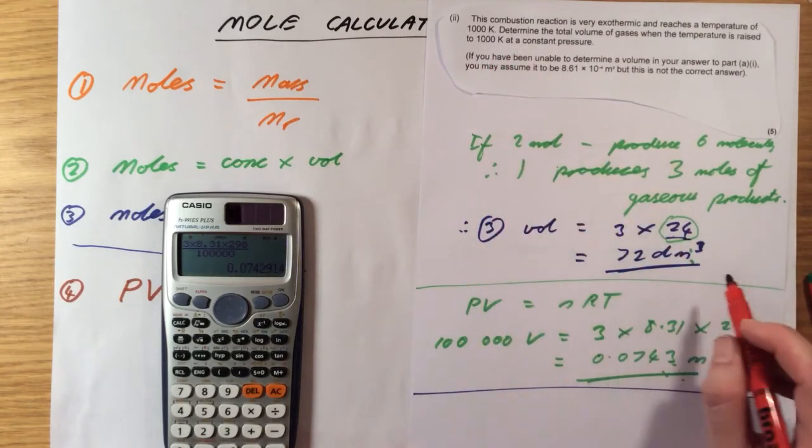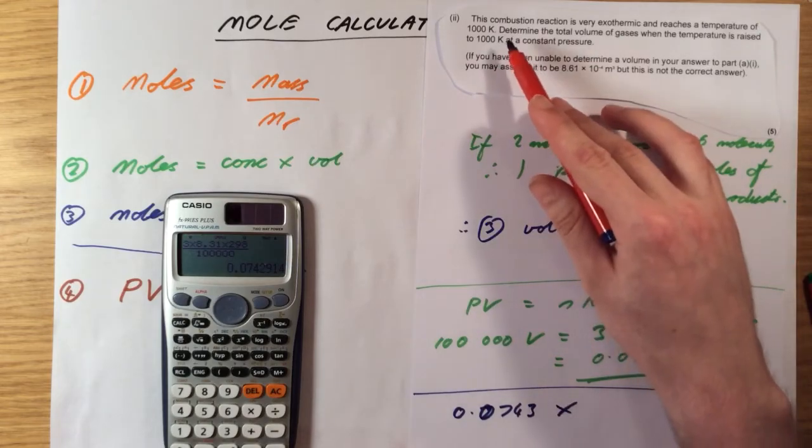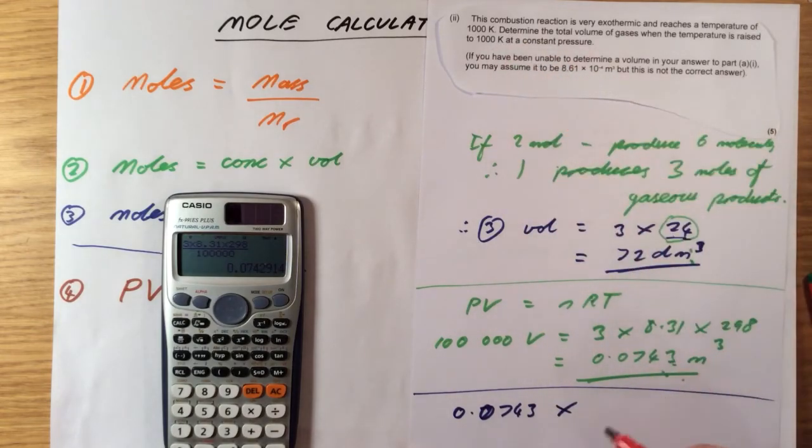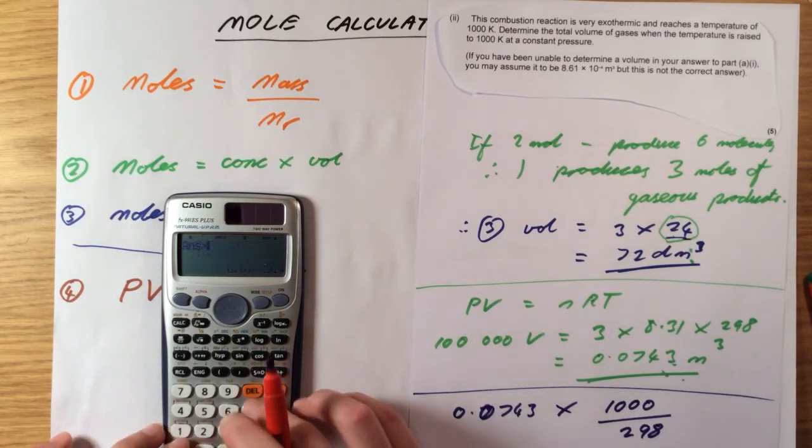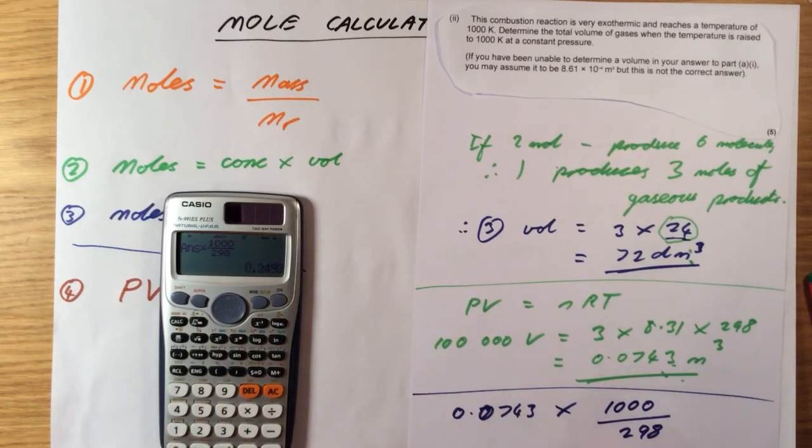So the easiest way to do this, let's use this number. The easiest way to do this, 0.0743, is to work out the ratio of 298 Kelvin to 1,000 Kelvin. So we simply actually have to times that by 1,000, divide it by 298, that's going to give us the ratio, times 1,000 over 298. And that gives us 0.249 metres cubed. Try and calculate this one using PV equals nRT again and see what you get, but it should be the same as that.